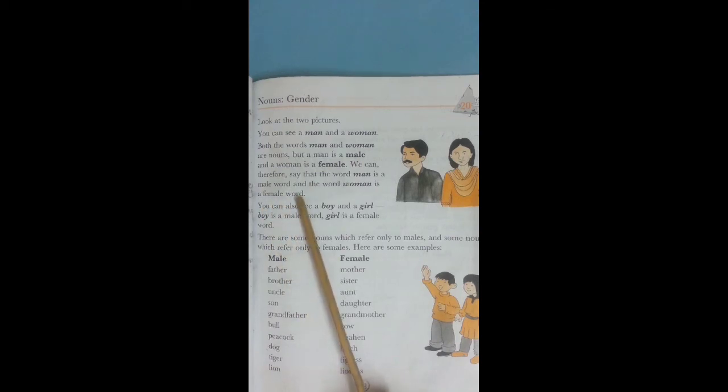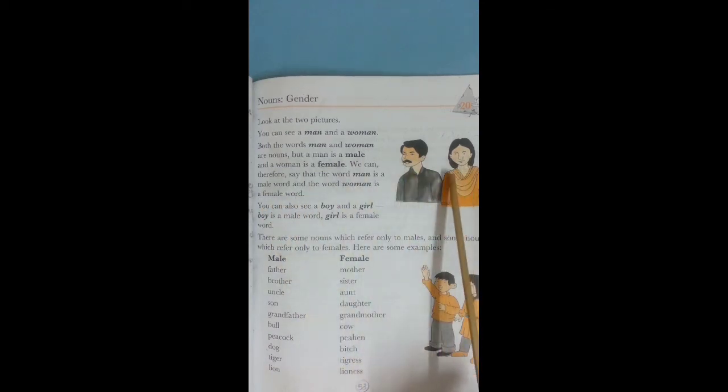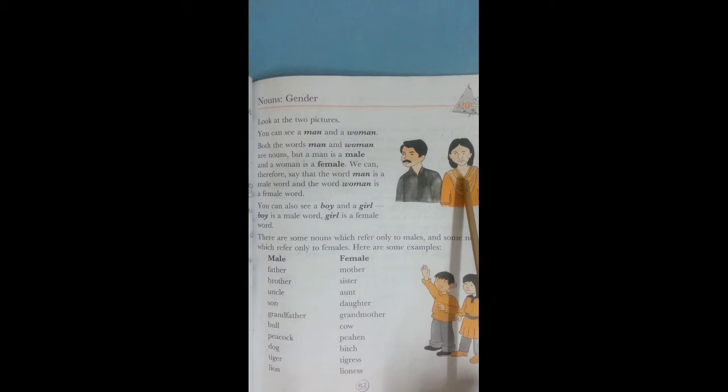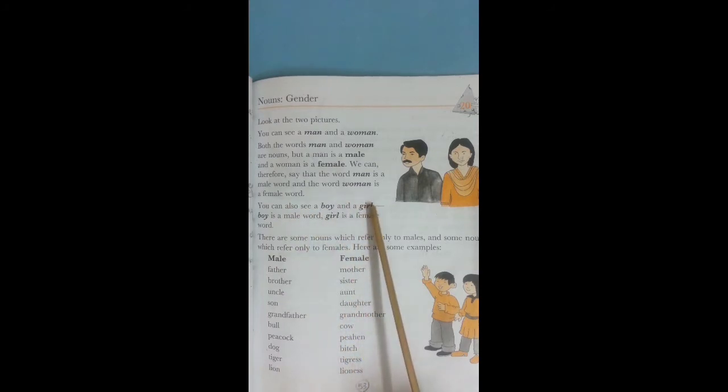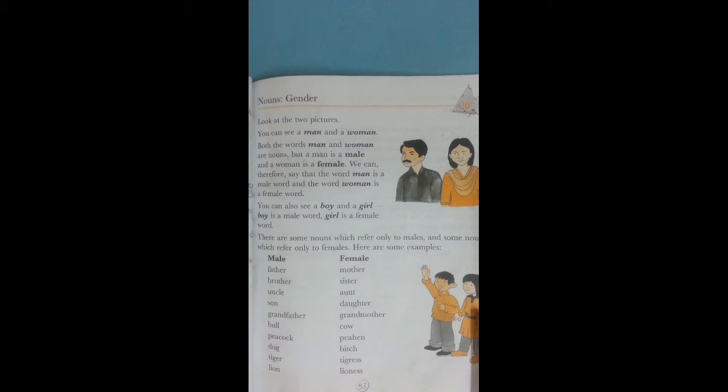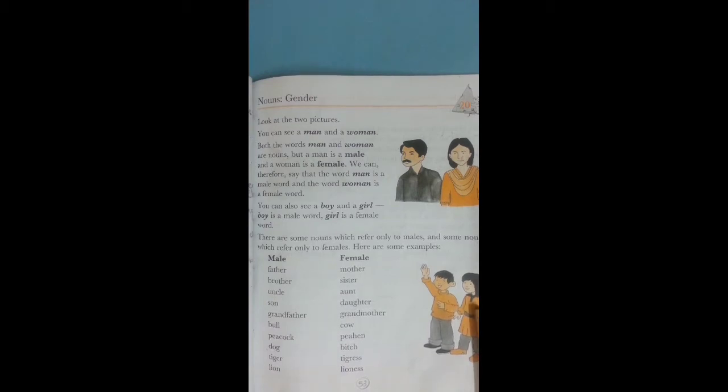We can therefore say that the word man is a male word and the word woman is a female word. Man and woman are both nouns, but man is male and woman is female. You can also see a boy and girl. Boy is a male word and girl is a female word.